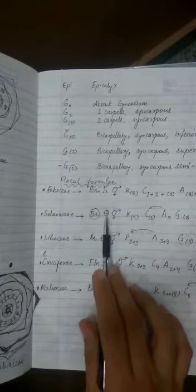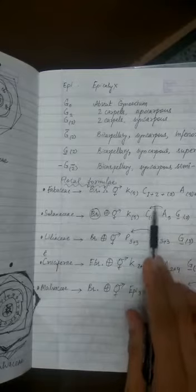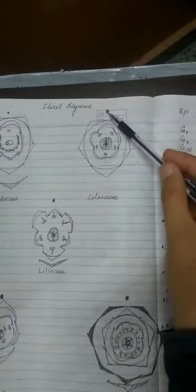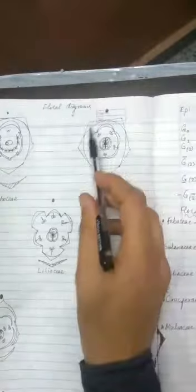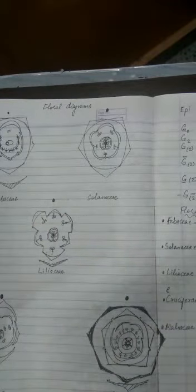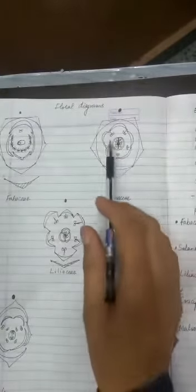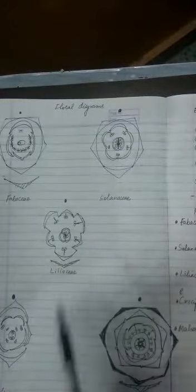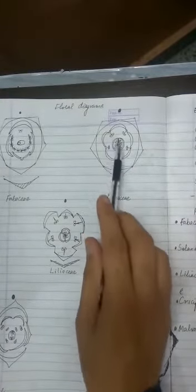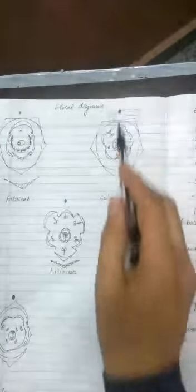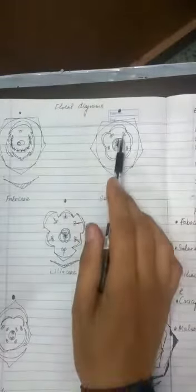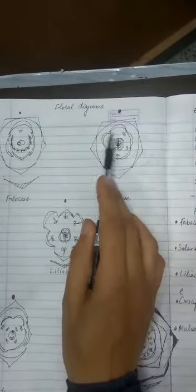Now for the Solanaceae family floral diagram: the bract may be present or absent, the flower is actinomorphic and bisexual. There are five fused sepals and five fused petals — you can see the line between the petals showing they are attached. Both sex organs are present, confirming it is bisexual. The flower can be cut into two equal halves by radial symmetry, confirming actinomorphy. There are five stamens that are epipetalous, attached to the petals.